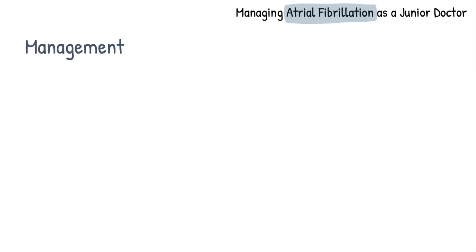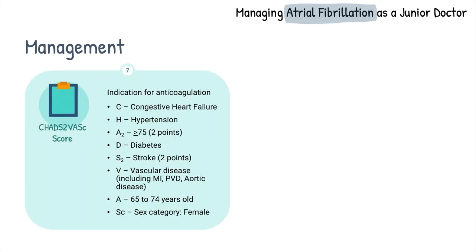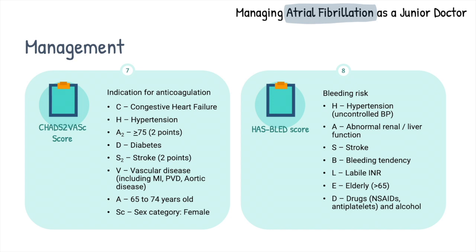When it comes to the management of AF, stroke prevention plays a huge role and this is mostly guided by risk scores. The CHA2DS2-VASc score is a useful clinical score to guide the decision of anticoagulation. A score of 2 or more indicates a requirement for anticoagulation, a score of 1 means to consider it, whilst a score of 0 means there is no indication. The HAS-BLED score is used to determine the risk of bleeding and identify factors which we can modify to reduce the risk. Generally, unless the HAS-BLED score is high and we are unable to alter it, anticoagulation takes precedence.